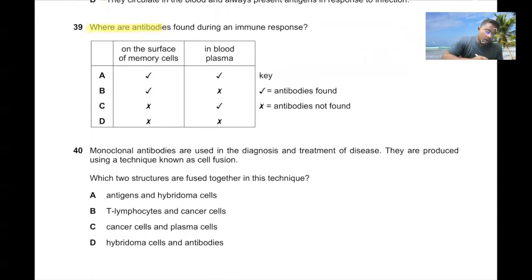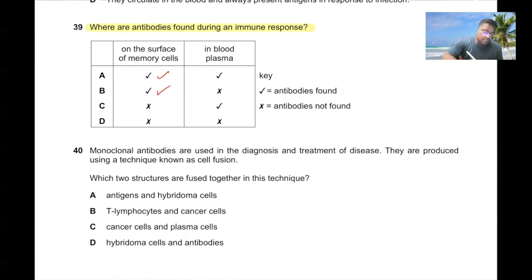Question number thirty-nine. Where are antibodies found during an immune response? They can be found on the surface of memory cells, and also in the blood plasma. 39A is the correct answer.